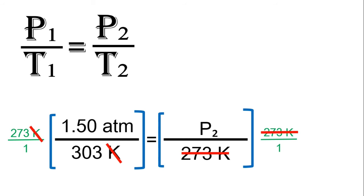So, do the mathematics, and you'll have P2 is equal to 409.5 atm over 303. So, dividing that, then you'll have P2 is equal to 1.35 atm.